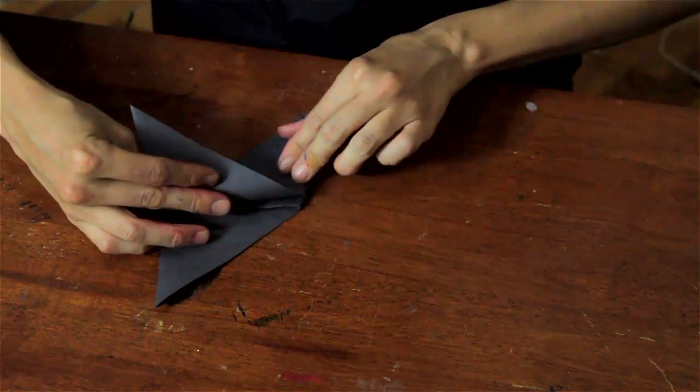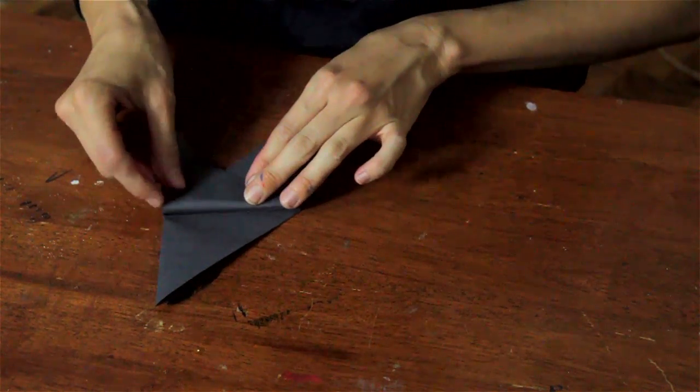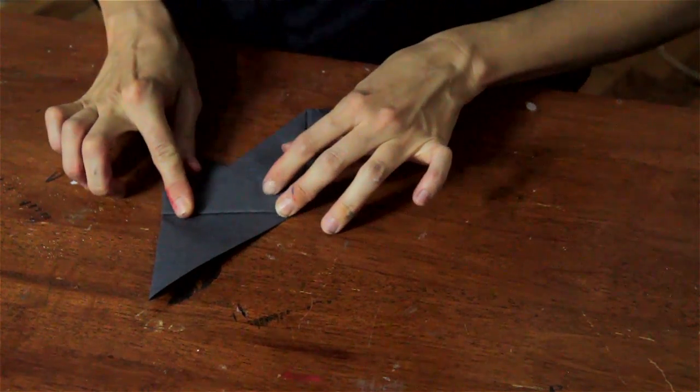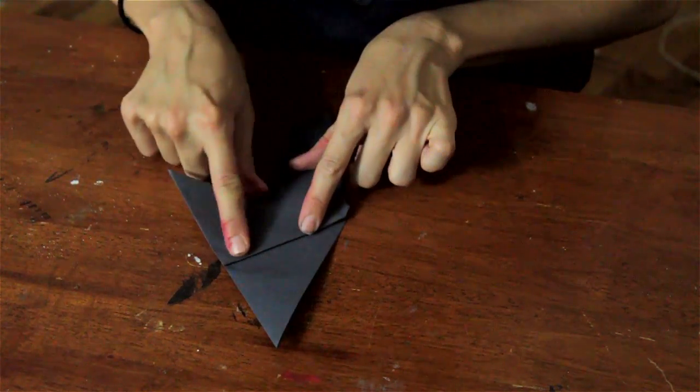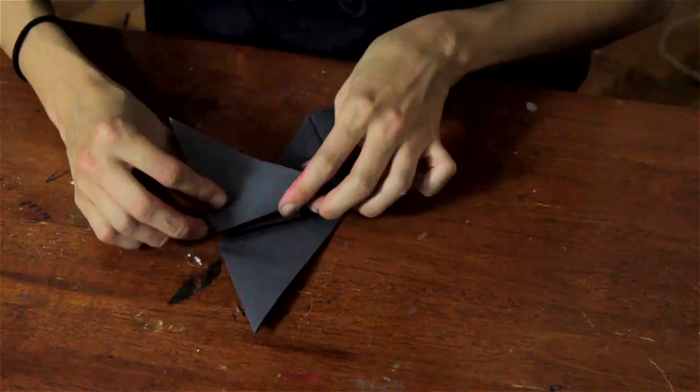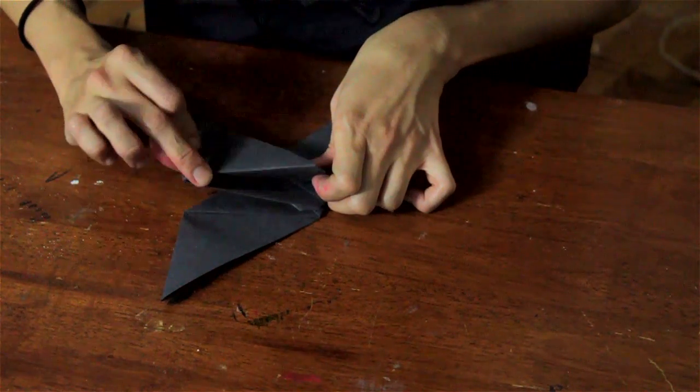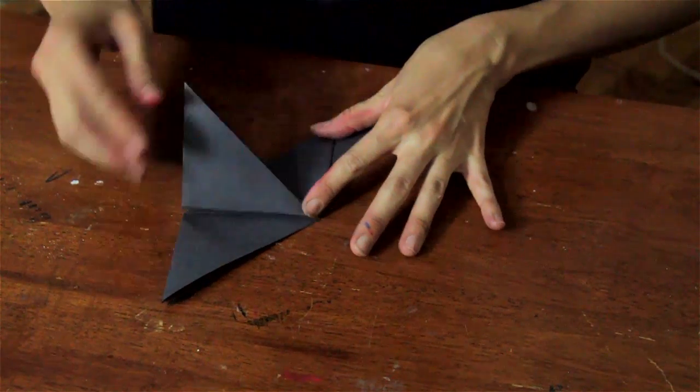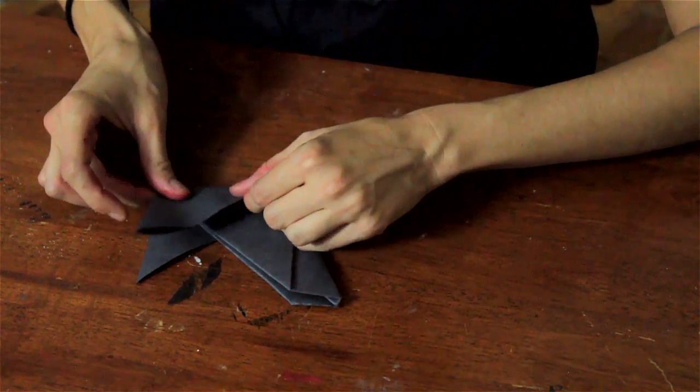And then you're going to fold this part down to make one of those big triangles. And you're going to be stopped by this fold here. So that's how you know when you've done the fold right. So I'll show you on the other side.